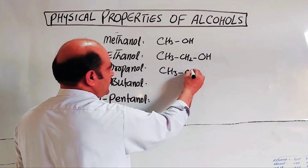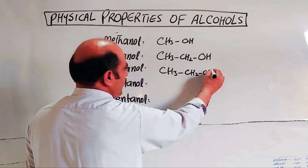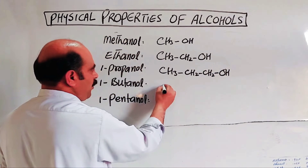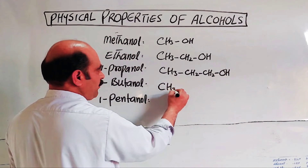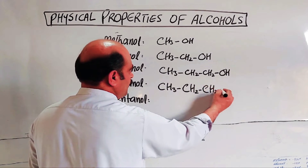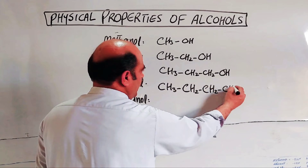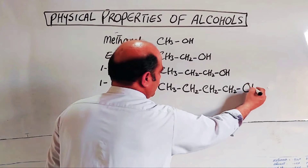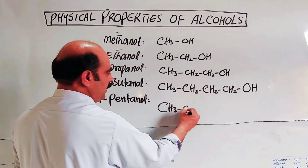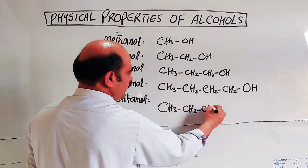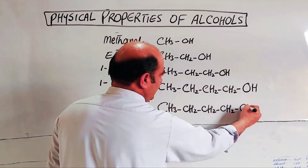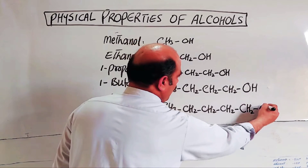Methanol: CH3OH. Ethanol: CH3CH2OH. 1-propanol: CH3CH2CH2OH. 1-butanol (4 carbons): CH3CH2CH2CH2OH. 1-pentanol (5 carbons): CH3CH2CH2CH2CH2OH.